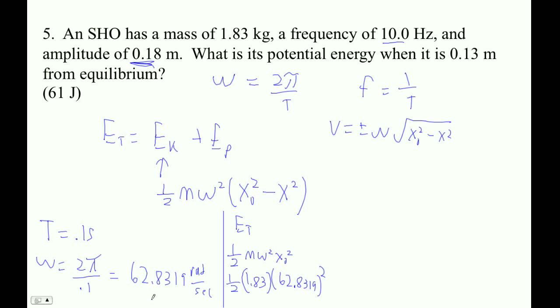I'm going to use my stored value A. Okay, amplitude is 0.18, so that's what this guy is here. So let's figure this out: 0.5 times 1.83 times the answer that I just got, squared, times 0.18 squared. My total energy is 117.0377 joules.